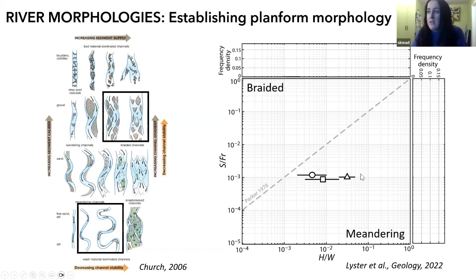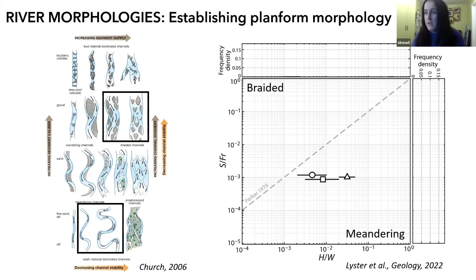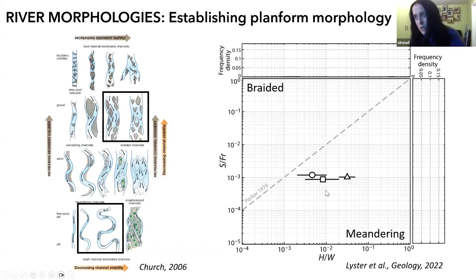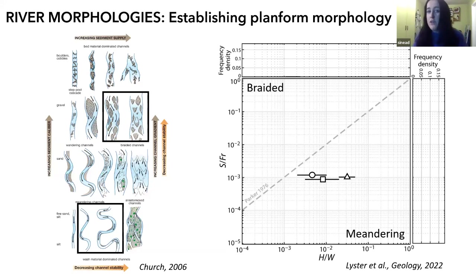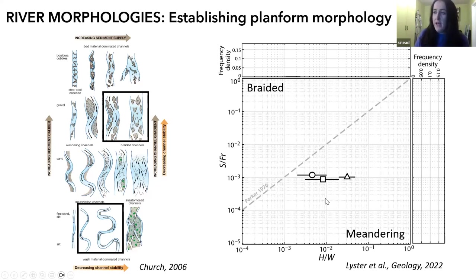Each of these symbols represents one of the formations, and they all sit in the meandering realm. For the Ferron Sandstone, that's fine — I've been in the field, I've seen it, it's definitely meandering. But this square represents the Blackhawk Formation, which was a bit strange because the Blackhawk Formation has both single-thread channels and multi-thread channels. So it was a bit alarming that it sat in the meandering realm.